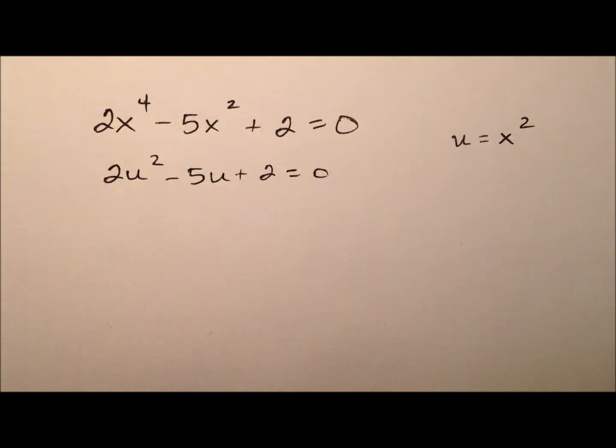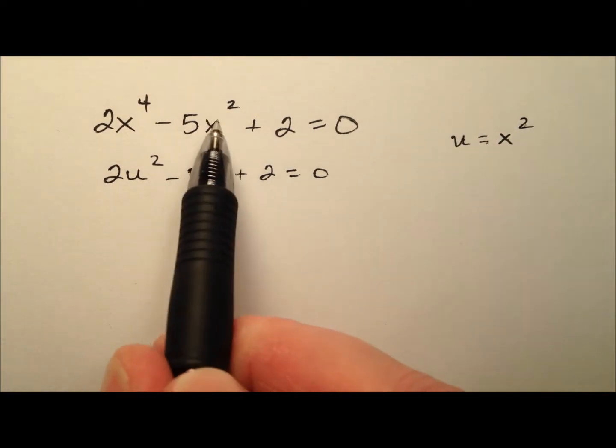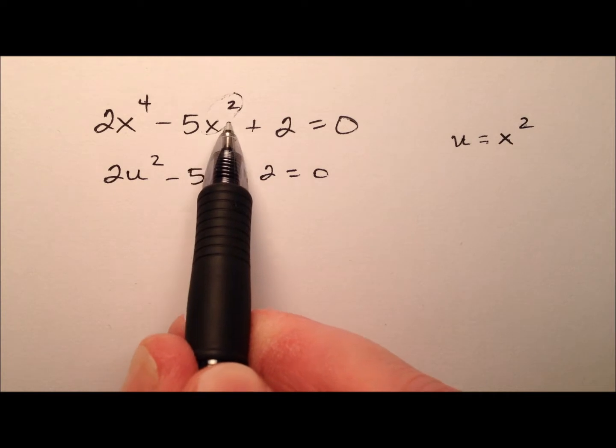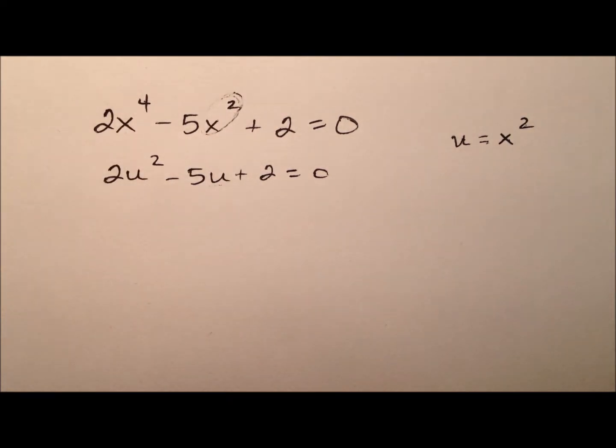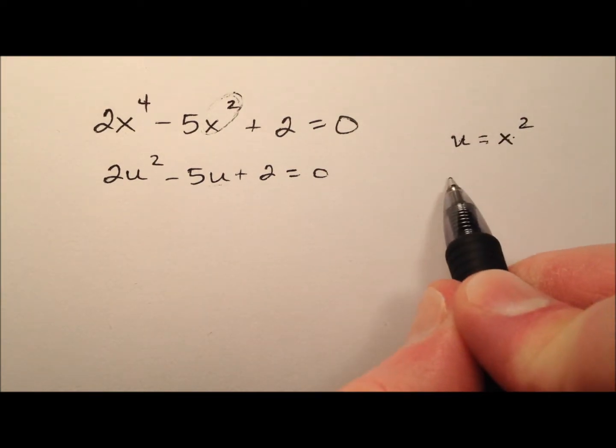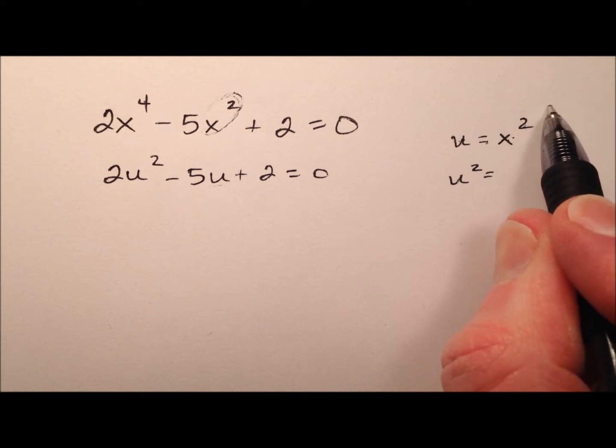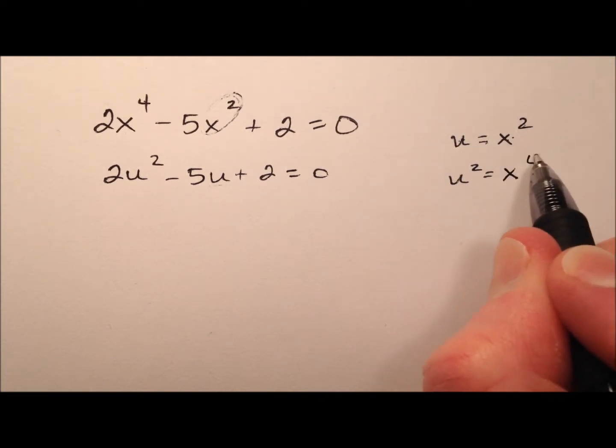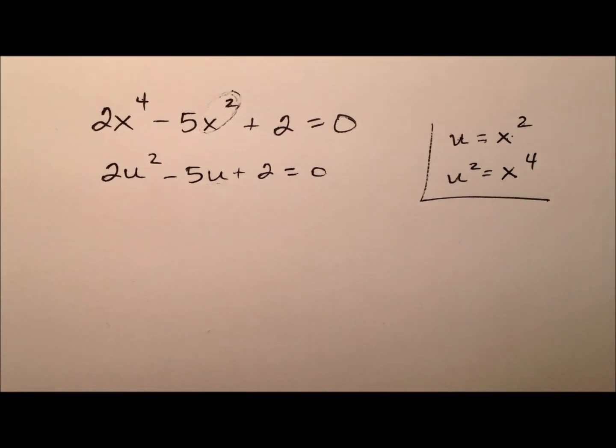How did we just do that? If we said u equals x squared, that's pretty obvious because this x squared becomes a u. But what about this x to the fourth? If we square both sides of this equation, we would have u squared equals x squared squared, so 2 times 2 is x to the fourth. So here is the substitution we use - the x to the fourth became a u squared.